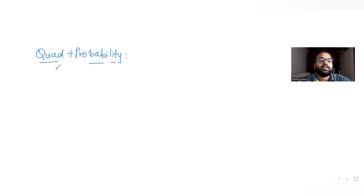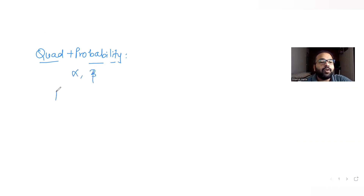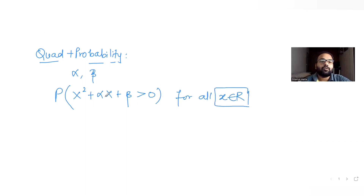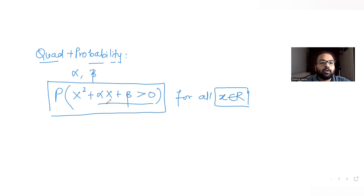If you see the question, it says that when you throw two fair dice, the outcomes which you get from the two fair dice are alpha and beta. We need to find the probability that a certain quadratic equation — x squared plus alpha x plus beta — is greater than 0 for all values of x in the real numbers.